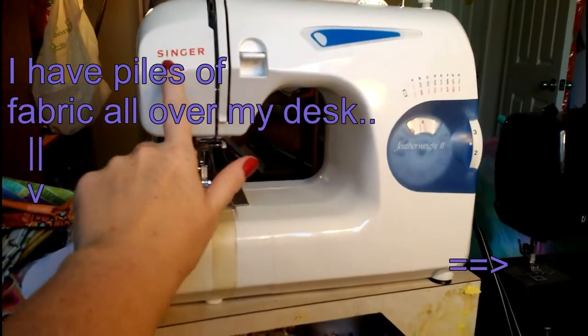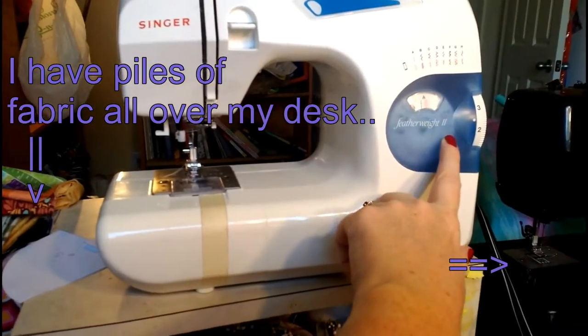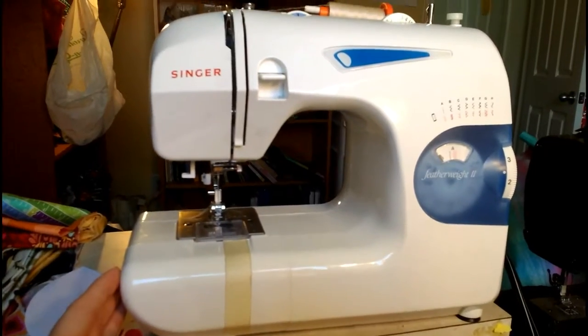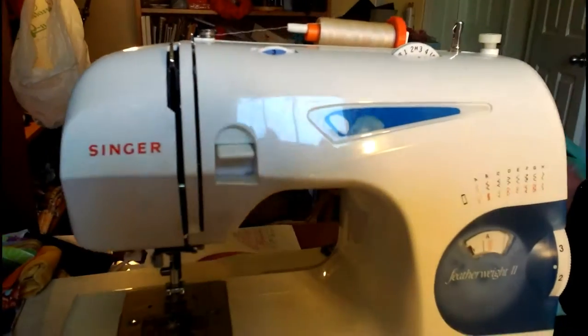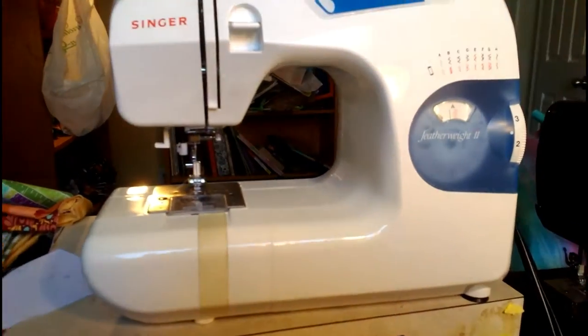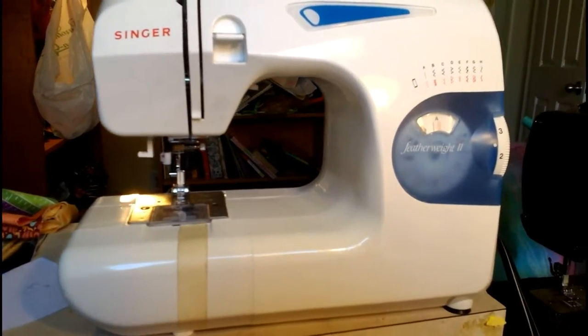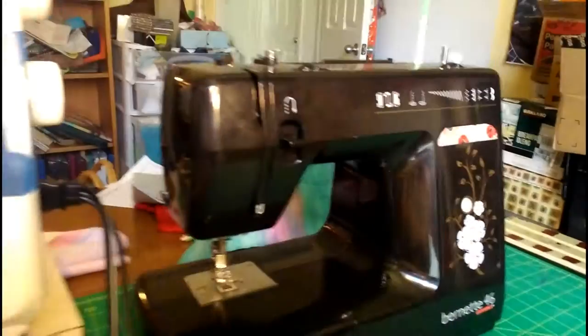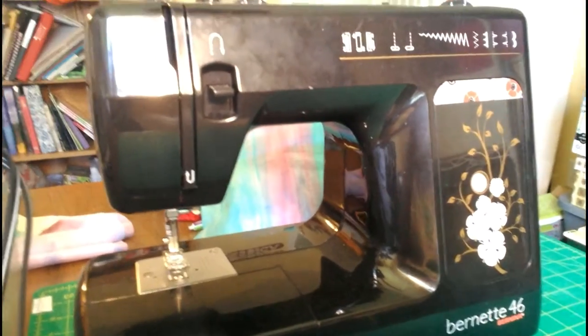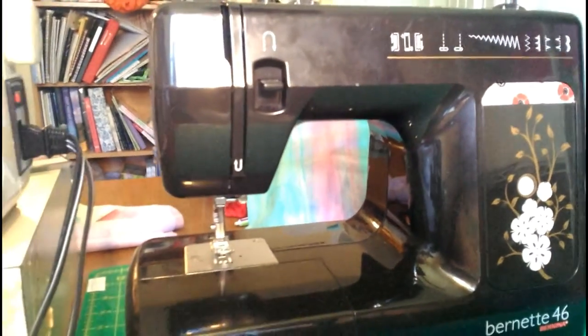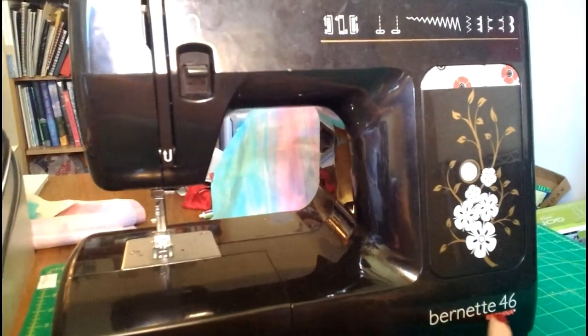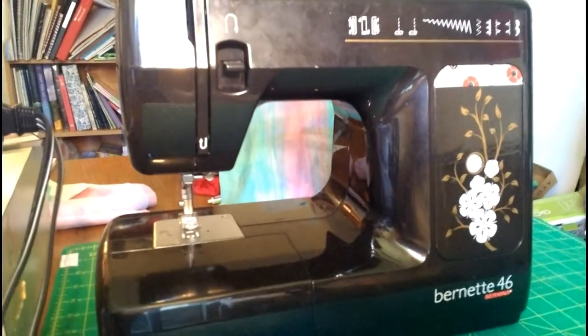So now you get to see some of my messy room and also my sewing machines. This one is a Singer Featherweight 2. It retails for about $200 to $300. And this one is my little Bernina Burnett 46. This one is pretty awesome as well and it retails for around $300.